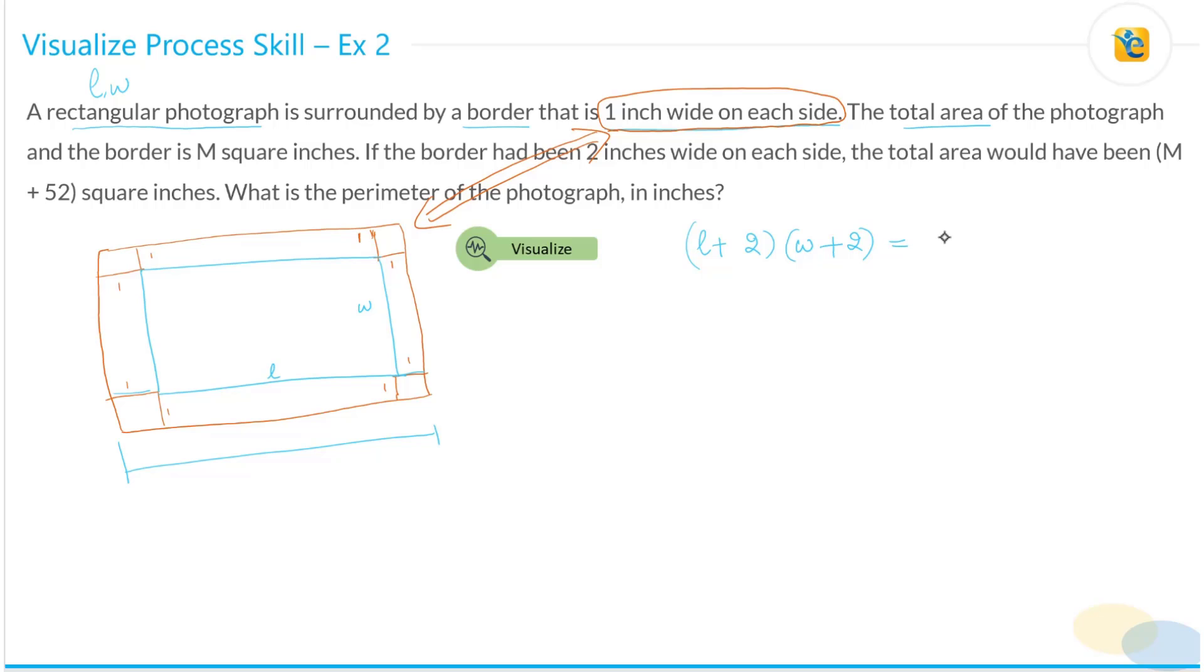And area is what? Length into breadth. So this is equal to M square inches. M in square. This is what you have translated from this information.